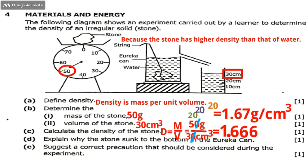Question 4e is: suggest a correct precaution that should be considered during the experiment. They want one, but I'll give you two. The first one is: use a thin string to tie the stone so that it doesn't affect the water reading, because if you use a thick string it will affect the reading.